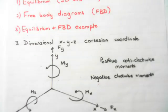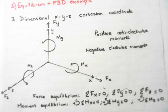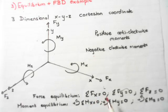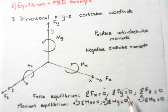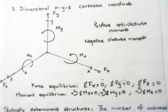To do force equilibrium, the following is done: the sum of forces in the horizontal direction equals zero, or the sum of forces in the y direction equals zero, or the sum of forces in the z direction also equals zero.